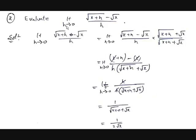Now let's see an example of rationalization. The example is: limit h tends to 0 of (√(x plus h) minus √x) divided by h. There is another method called L'Hôpital's Rule, but it is based on differentiation — the continuation of limits — so we will discuss that in the next chapter. For rationalization, the numerator √(x plus h) minus √x is in the form of a minus b.